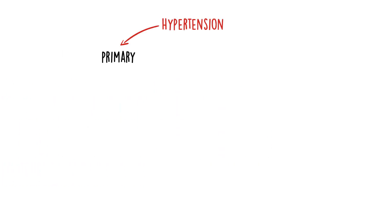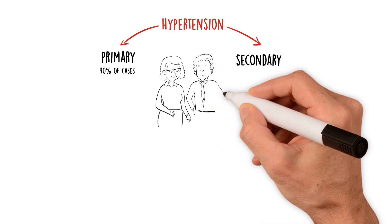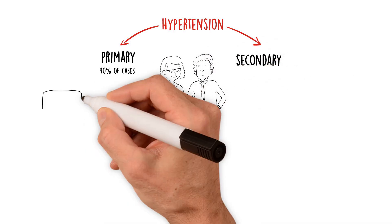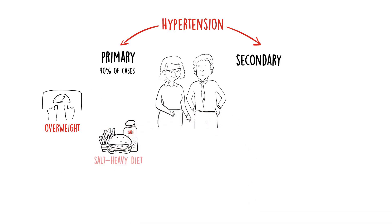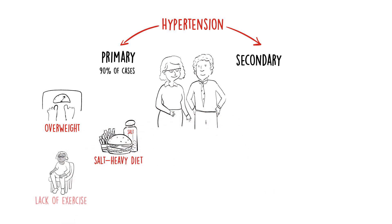Hypertension can be primary or secondary. Primary hypertension is responsible for over 90% of cases. It's more common as you get older and may be caused by one or more of several possible factors, such as being overweight, a salt-heavy diet, lack of exercise, and drinking alcohol.